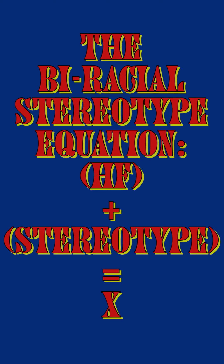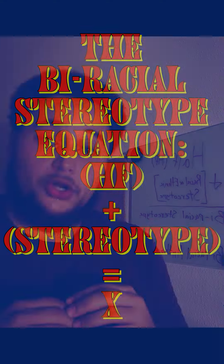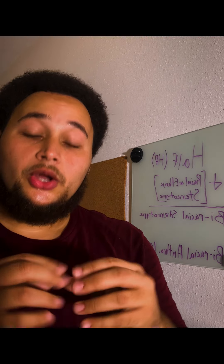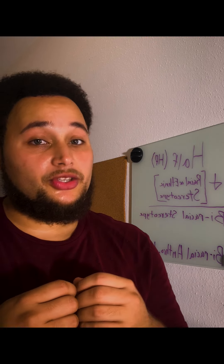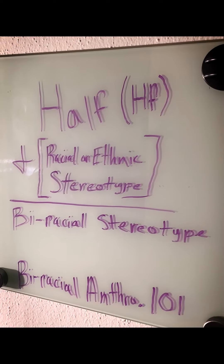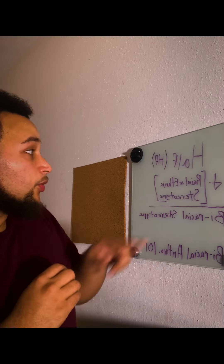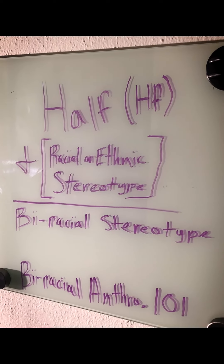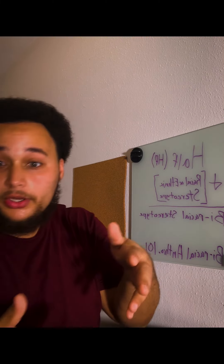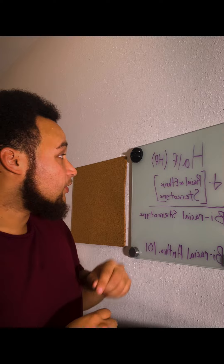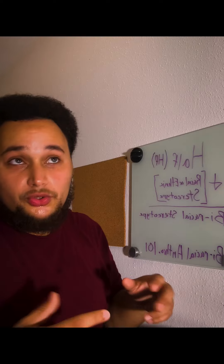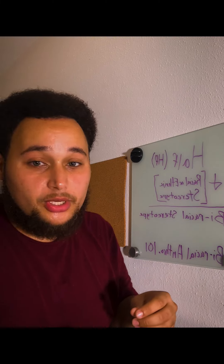Now that we know what biracial means on the simplest fundamental terms, where does this apply to our mathematical equation? Let me explain the equation to you in the simplest way I can. A biracial slur starts with the word 'half' — you take half of something, so a fraction of it, one over two. You may sometimes see it as H and F; that's just an acronym we use in equation format. So if you see H and F times two, that's what it means.